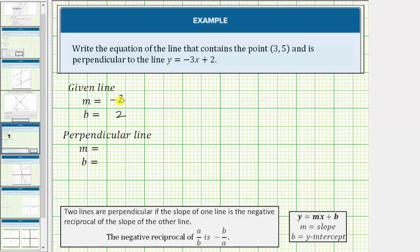Any line perpendicular to this line must have a slope that's the negative reciprocal of -3, or -3/1. The negative reciprocal of -3/1 would be positive 1/3, which is the slope of any perpendicular line to the given line.